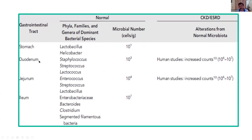As Dr. Vikas has already pointed out, when you move from the stomach towards the ileum and colon, the number of bacteria goes up. In normal human beings, the number of microbial organisms is very much less — only around 10 to the power 1 in the stomach, thousands in the duodenum, going up in the jejunum, and reaching up to trillions — 10 to the power 12 — in the colon.